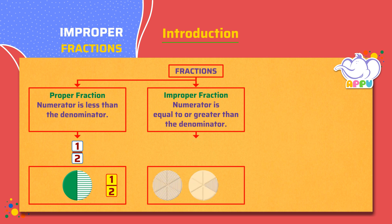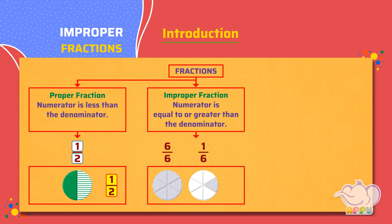The shaded area of the first circle represents 6 by 6, because 6 parts are shaded out of 6 parts. And the shaded area of the second circle represents 1 by 6, because 1 part is shaded out of 6 parts. When we add, we get 7 by 6.